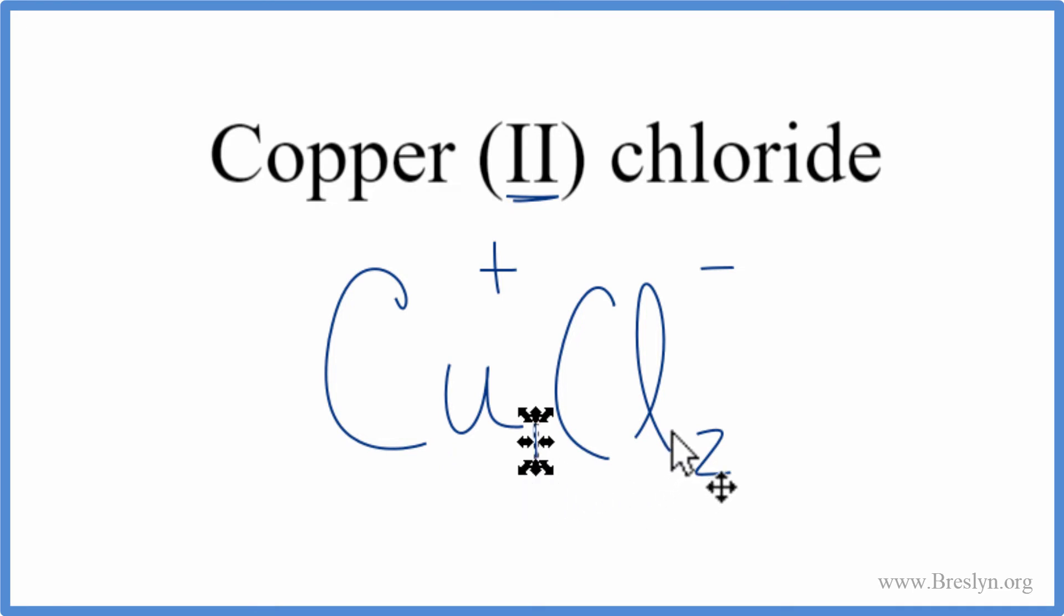We don't write the 1 by convention. Get rid of the charges. And that's the formula for copper(II) chloride. We should check our work, though.